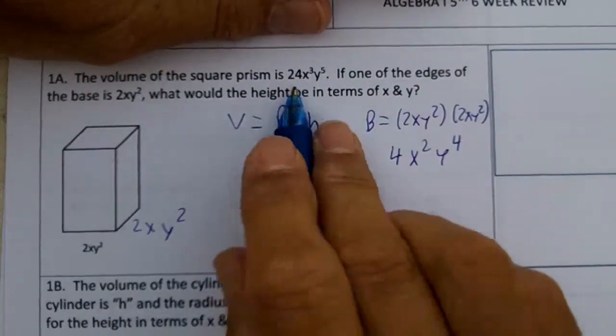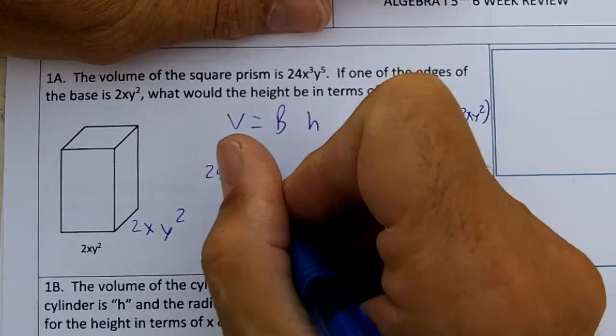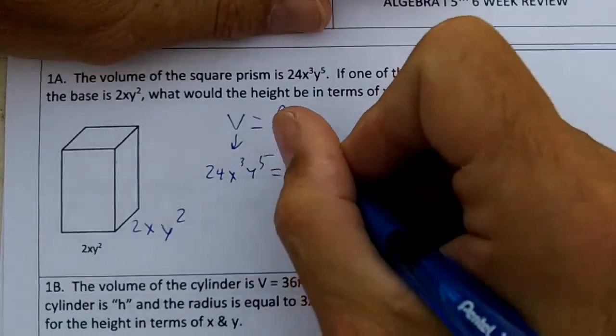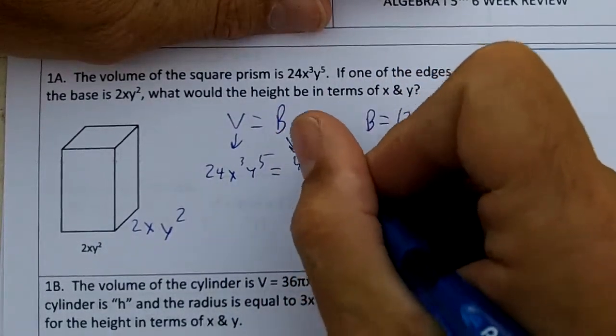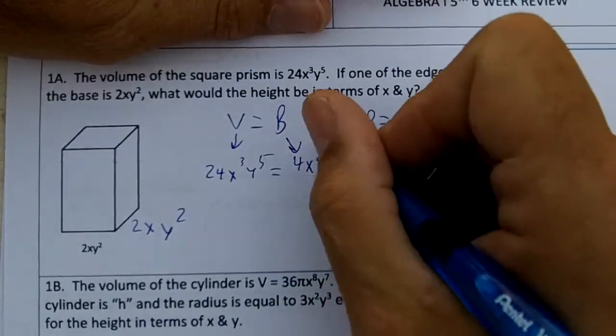So I know the volume is 24x³y⁵ equals our area of the base, which is 4x²y⁴, and we need to find the height.